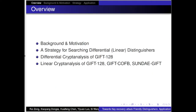My presentation contains four parts. The first one, we talk about the background and our motivation to write this paper. The second is our strategy for searching differential or linear distinguishers. Then we talk about the differential cryptanalysis result of GIFT-128. Then we give the linear cryptanalysis result of GIFT-128, GIFT-COFB, and SongBird GIFT.